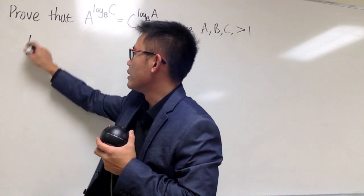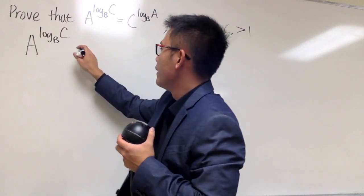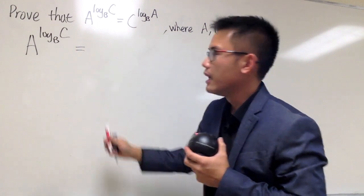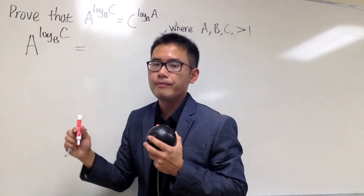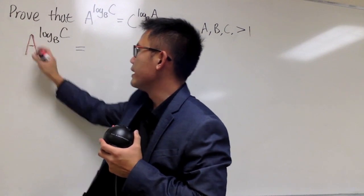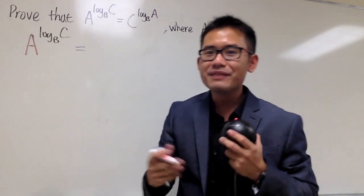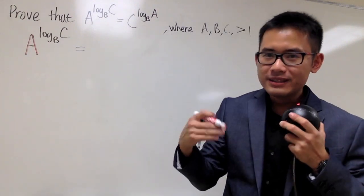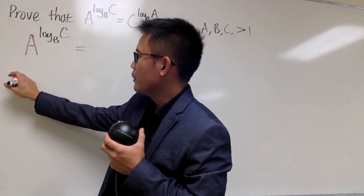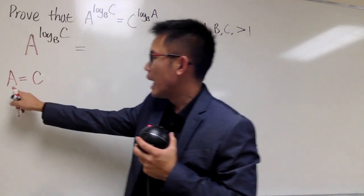Let me write this down right here: A to the log base B of C. This is the first move. As you can see, I want to have C as the base on the right-hand side, but right now the base is A — that's no good. So the question is: is it possible to write A in terms of C to some power and then get A back? I want to have C as the base.